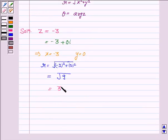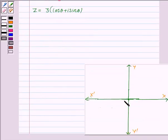So r = 3. This is the Argand plane, and we have to plot the point x = -3, y = 0. This point would be here. And we have to obtain the value of θ.